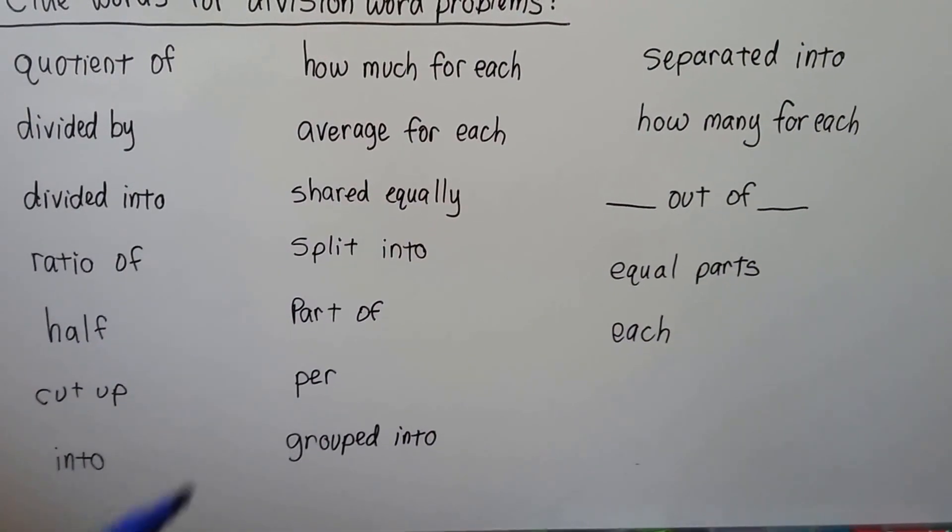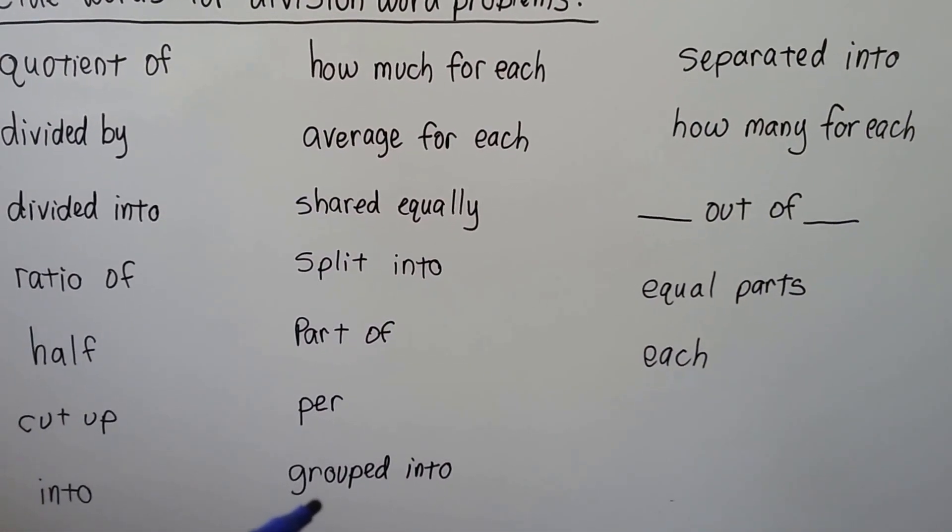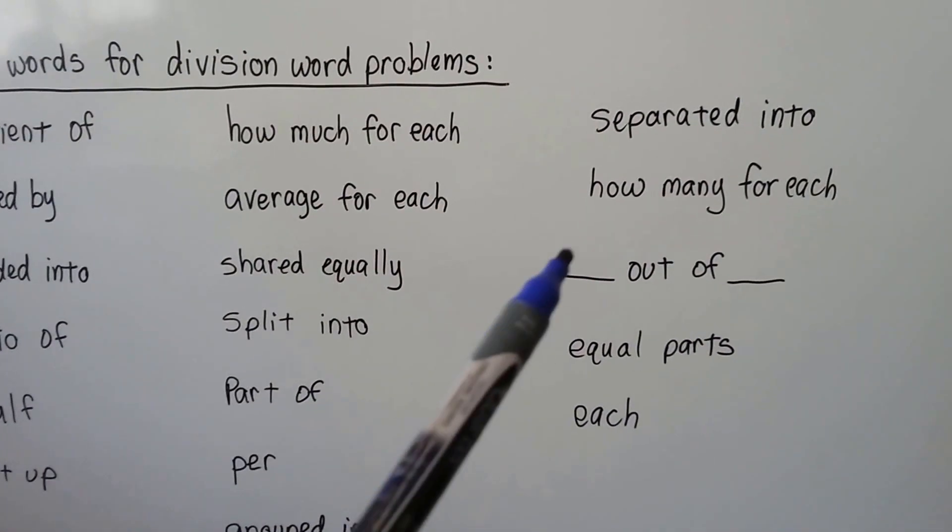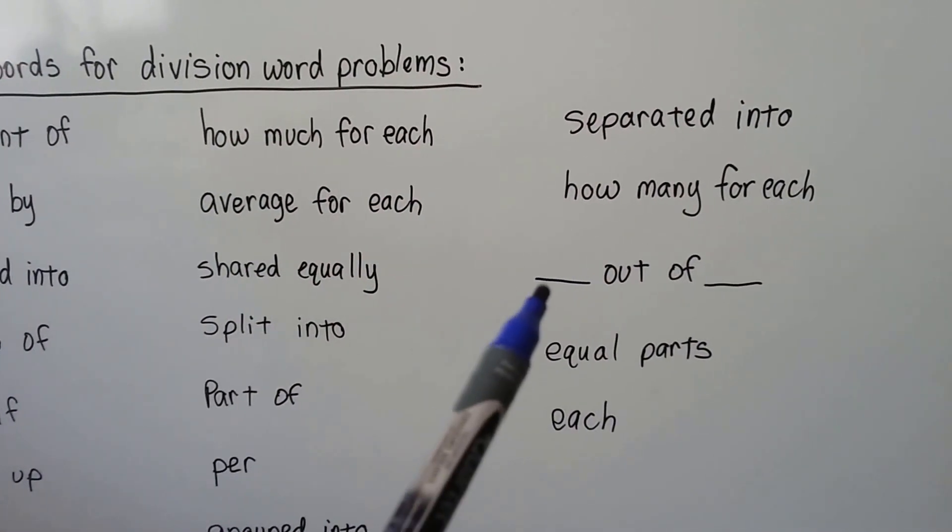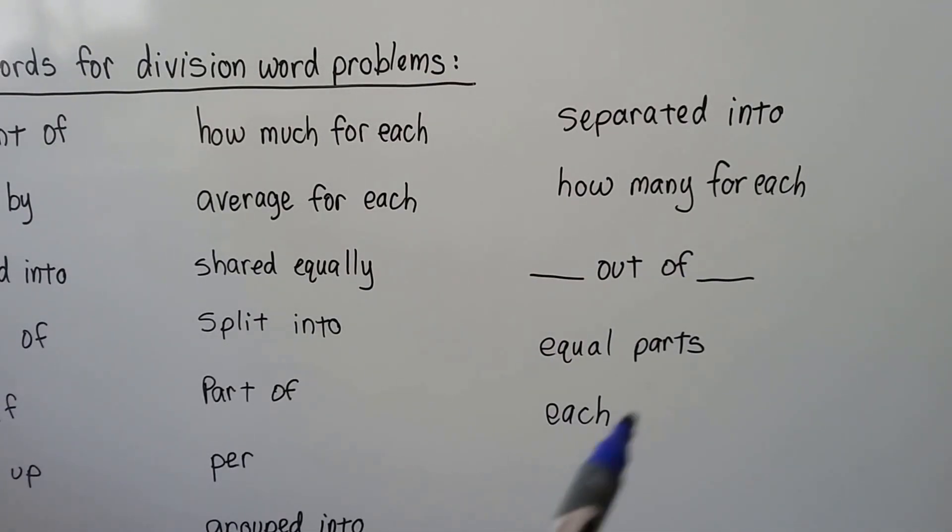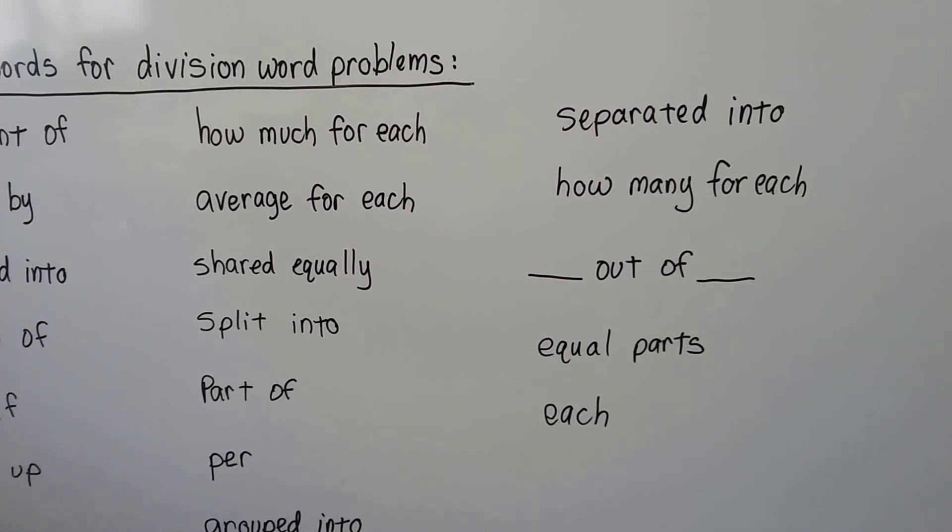Or it's even per something. They could be grouped into groups. It could be separated into, or it may ask how many for each, or a number out of another number. There might be equal parts, or it just might say each.